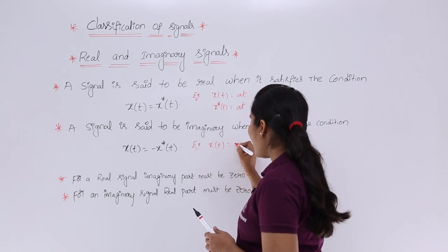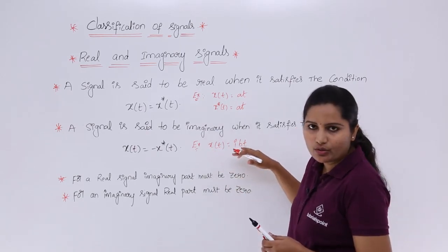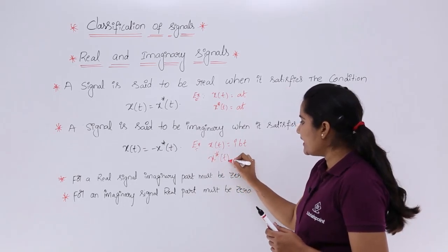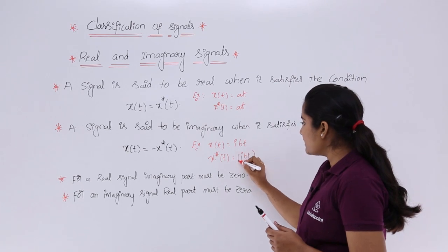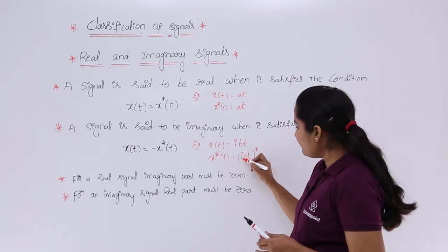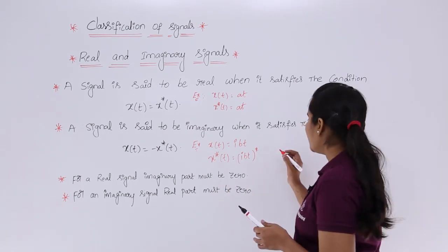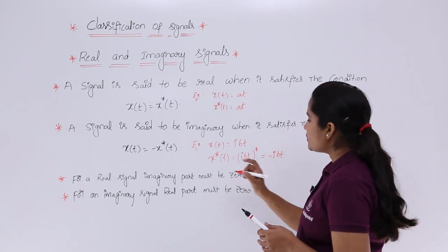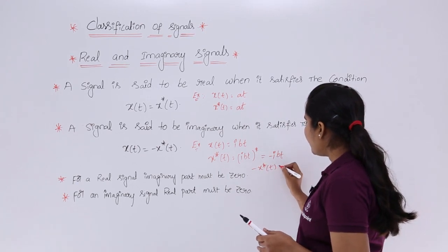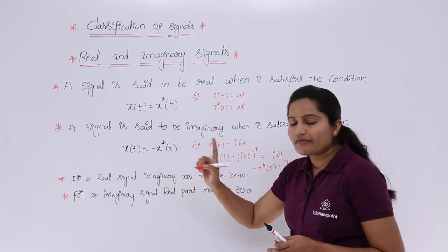Consider x(t) = ibt. If you consider the complex conjugate, you get (ibt)*. Now for bt, the complex conjugate won't change anything — but for i, i* becomes minus i. So you are going to get -ibt, meaning x*(t) = -ibt. If you consider -x*(t), that is equivalent to ibt again.